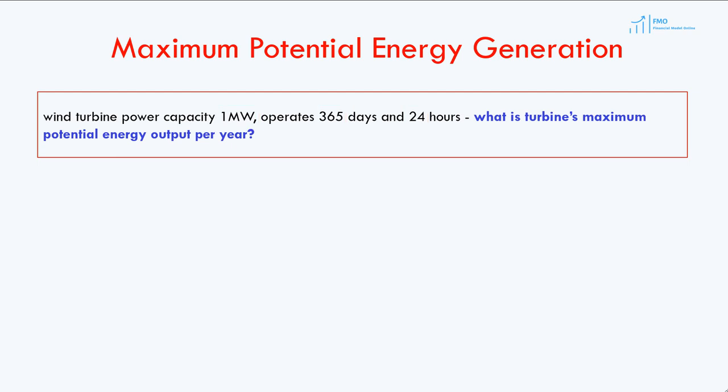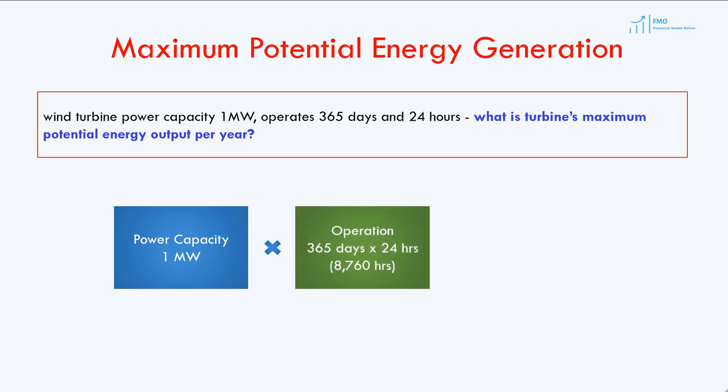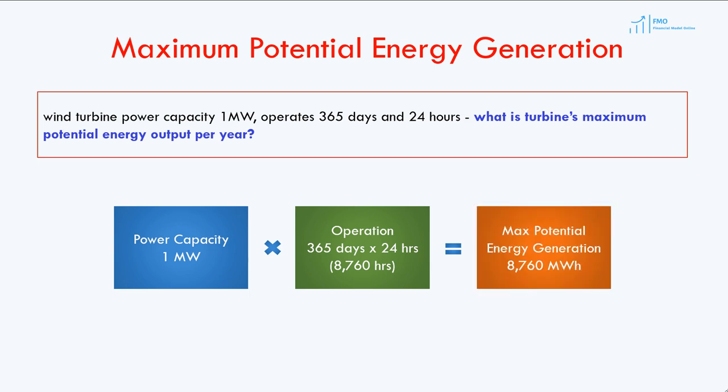In this case, the power capacity is 1 megawatt, and the number of hours is 8,760, which is 365 times 24. Multiplying power capacity by the number of hours, we get the maximum potential energy generation of 8,760 megawatt hours.